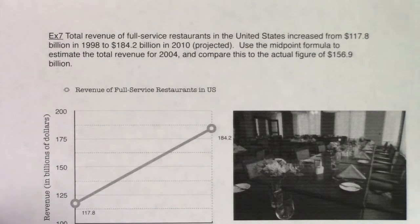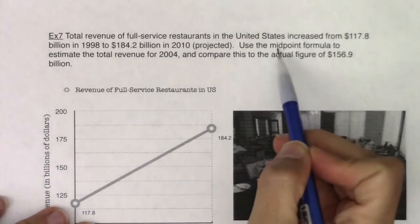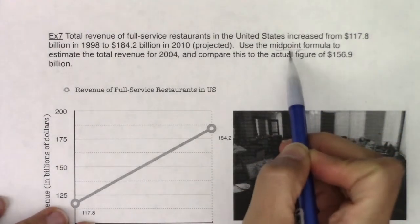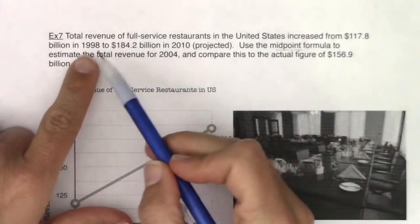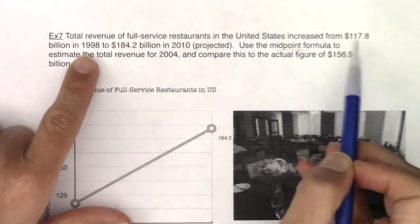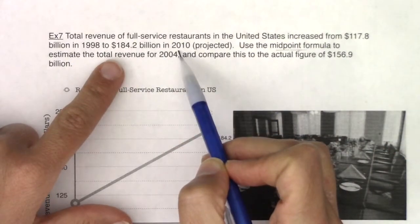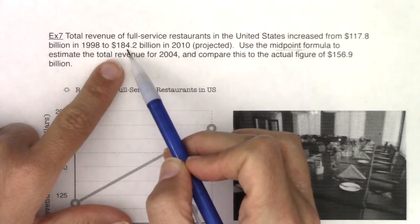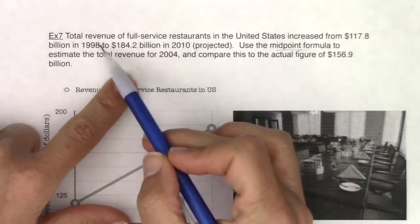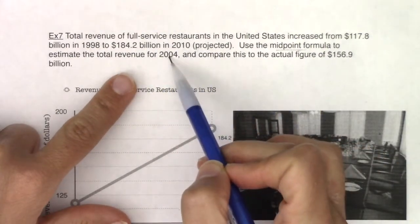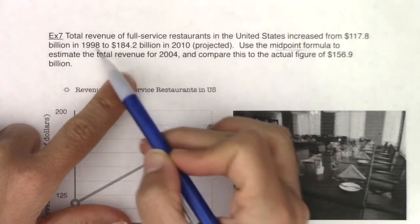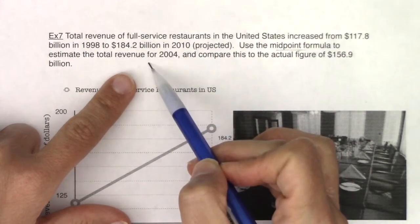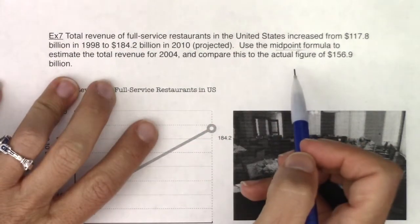I want to point out we're being asked to use the midpoint formula. I was given two ordered pairs: 1998 and $117.8, and 2010 and $184.2. Halfway between 1998 and 2010 is the year 2004. It's six years away from 2010 and six years away from 1998. So I'm going to use that midpoint formula.